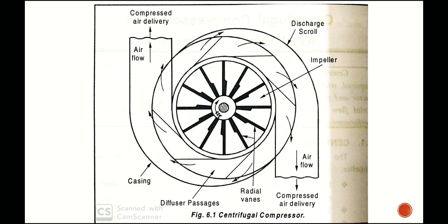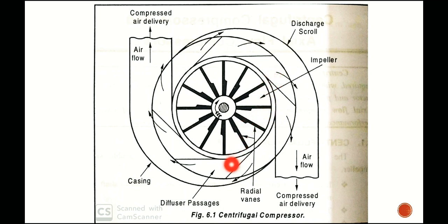The impeller supplies energy to the air, increasing its velocity and pressure. The high-velocity air from the impeller then enters the diffuser passages.